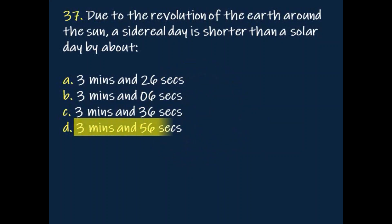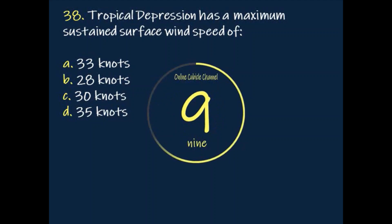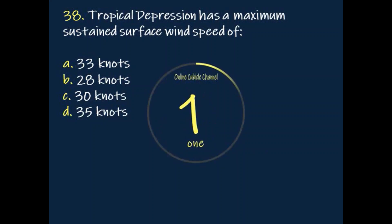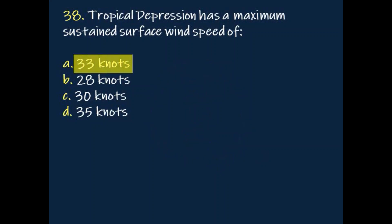Answer: 3 minutes and 56 seconds. Question: A tropical depression has a maximum sustained surface wind speed of? Answer: 33 knots.